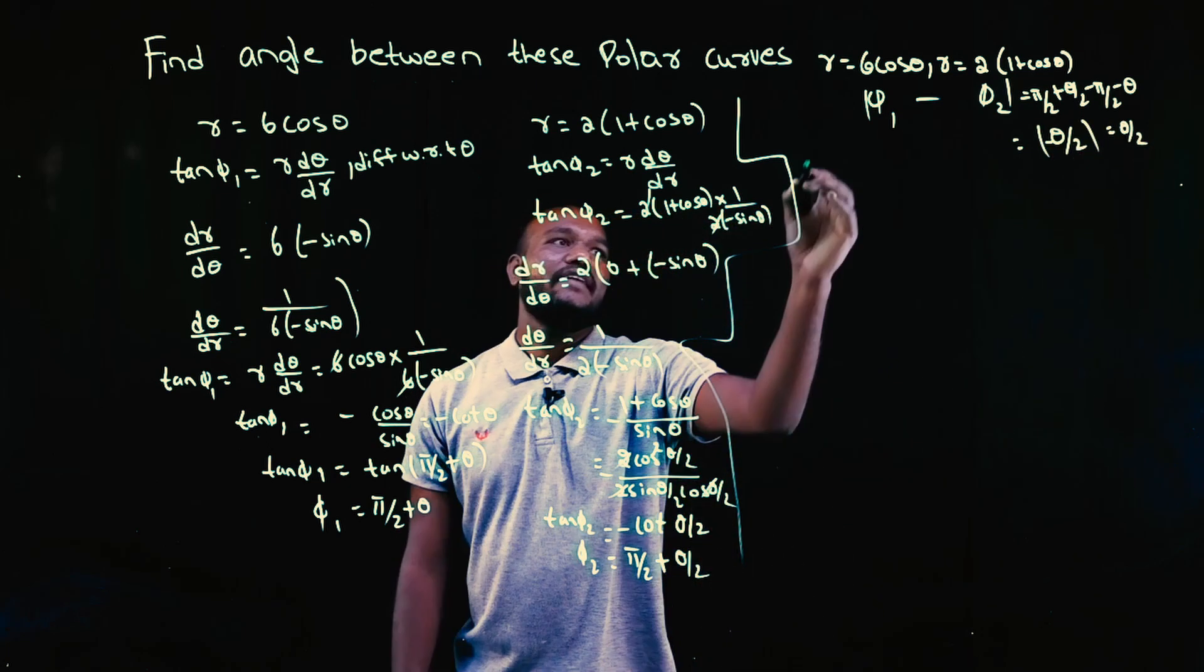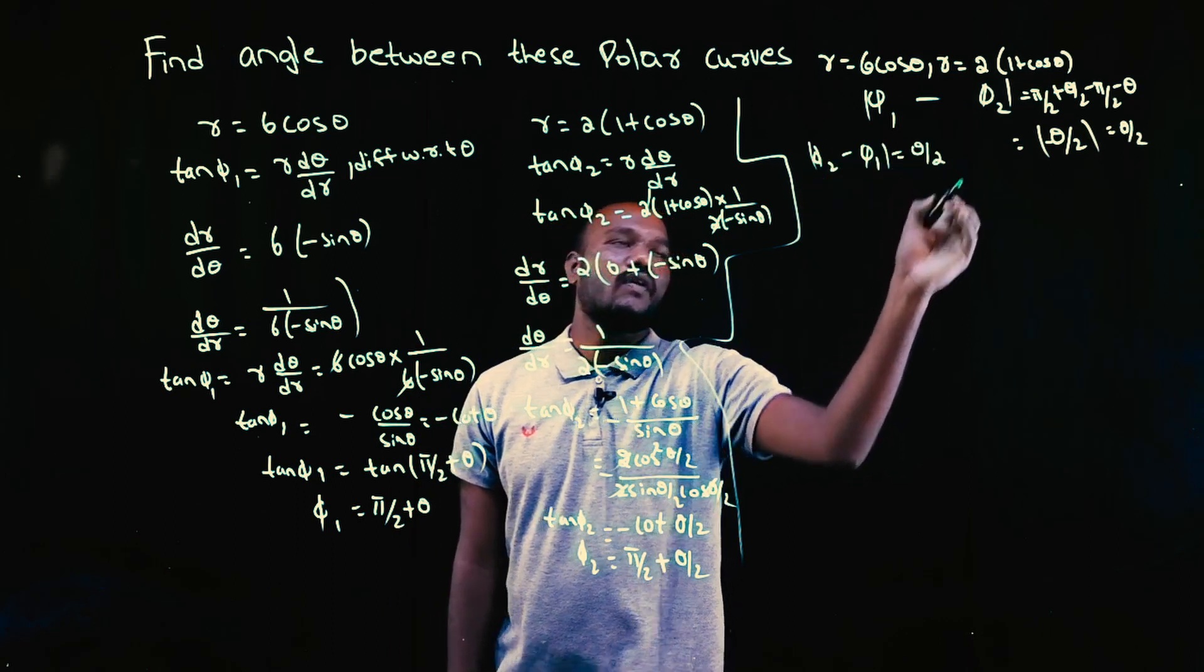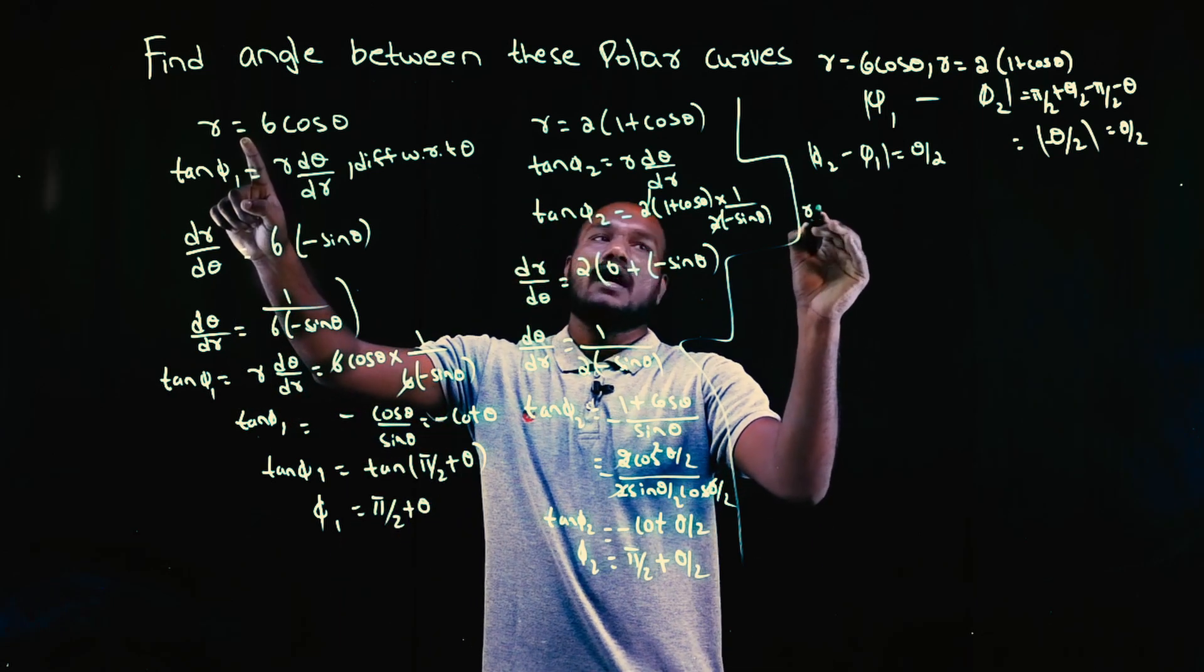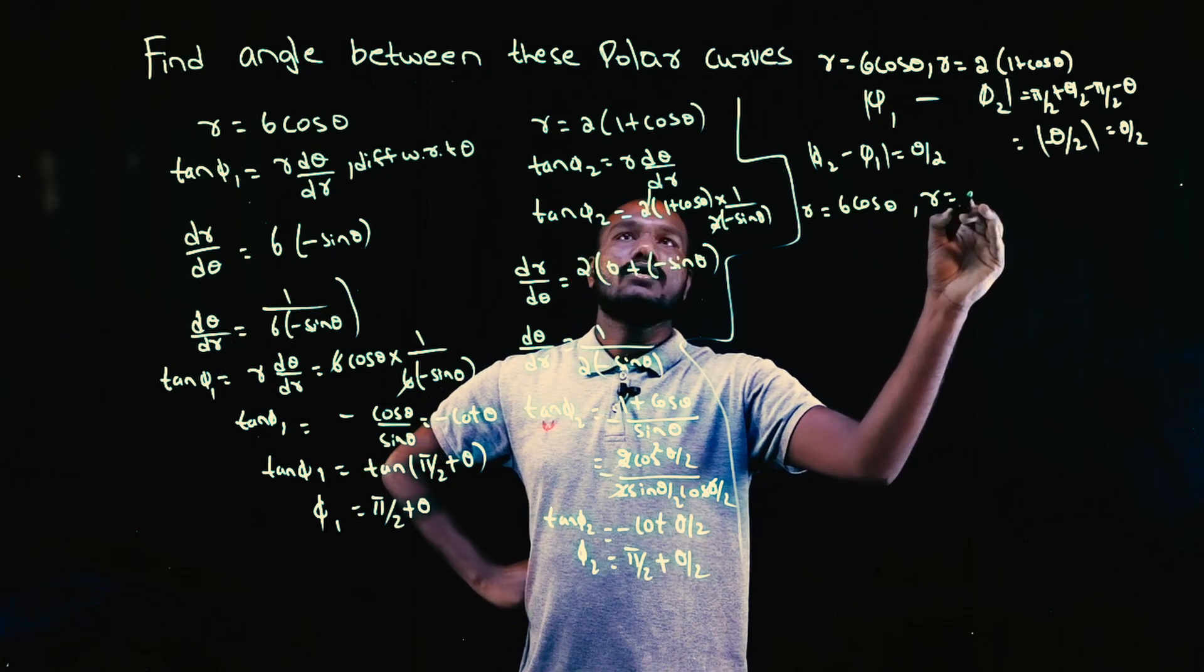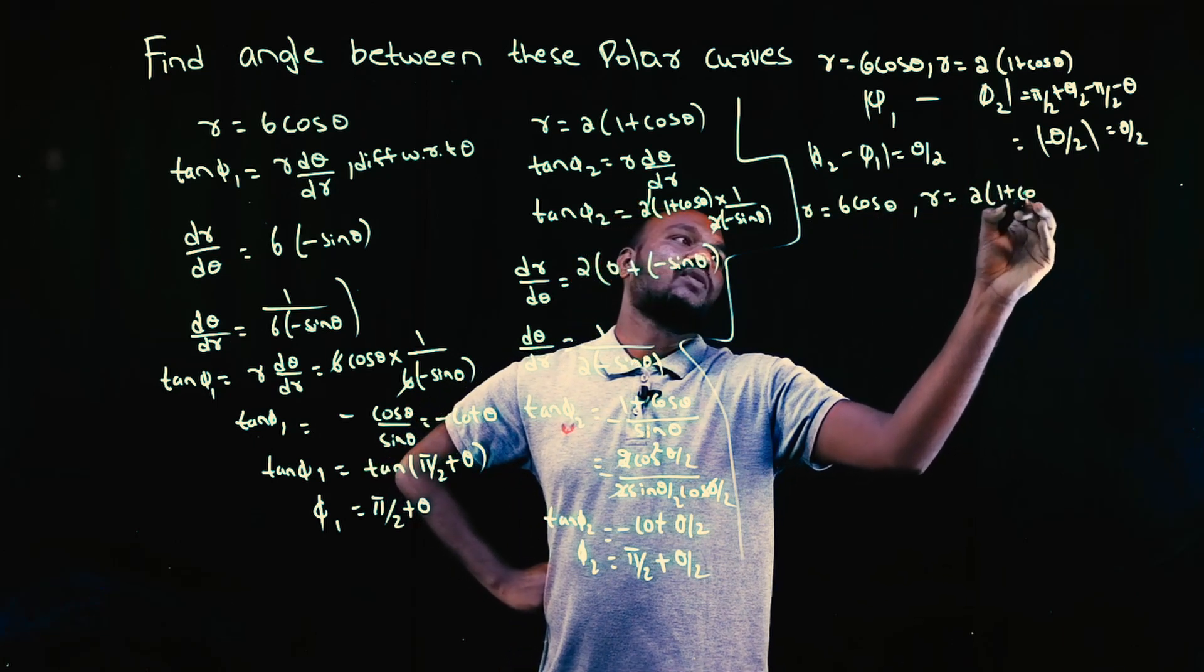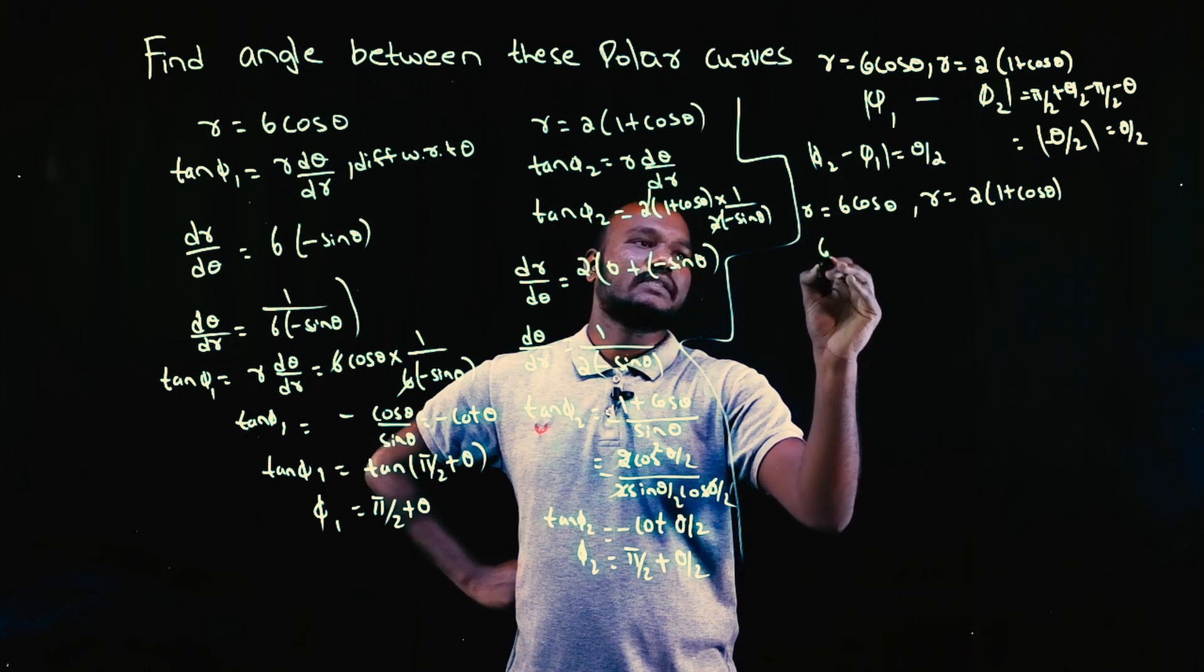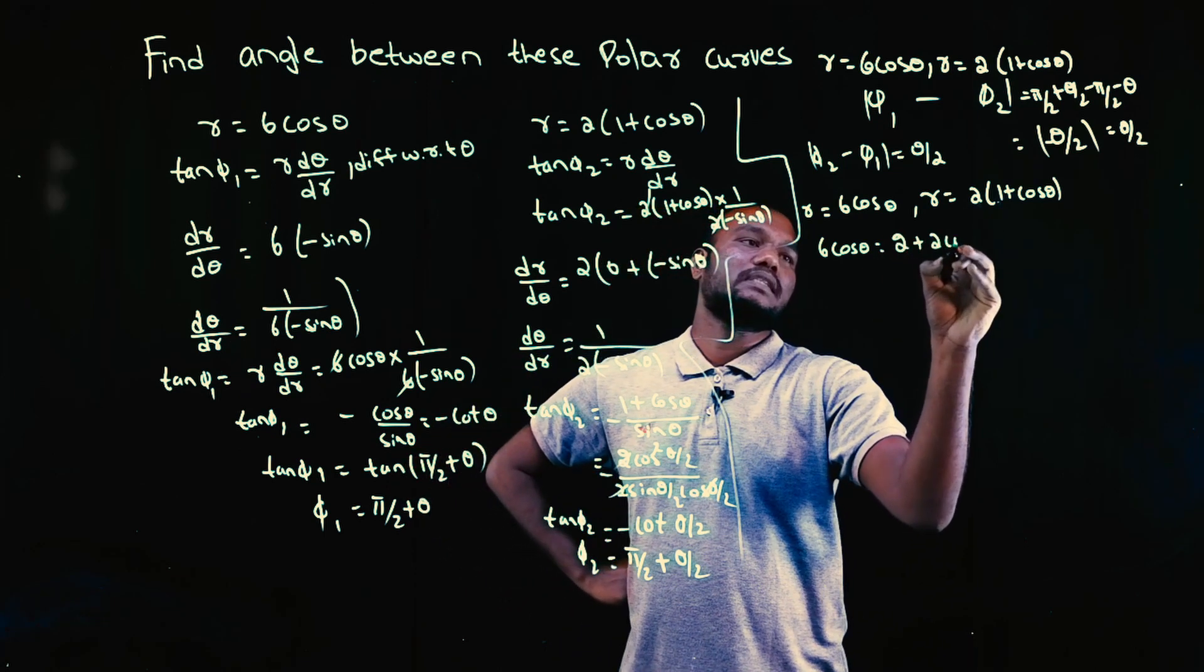Now we have φ2 minus φ1 value as θ/2. But, we want to eliminate the value of θ. How to do that? Again, we have to take the question. R is equal to 6 cos θ. And, R is also given as 2 into 1 plus cos θ. So, this is the value of R. Just substitute here. 6 cos θ is equal to 2 plus 2 cos θ.